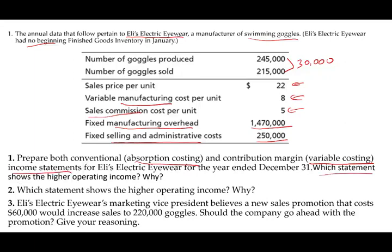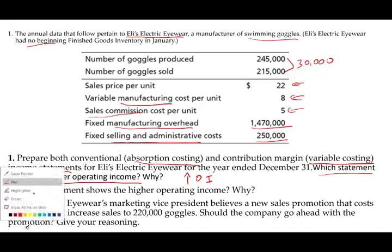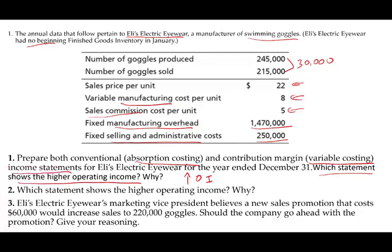Which statement shows a higher operating income and why? I'll give you a second to answer that based on your understanding. Absorption costing will have a higher operating income. The reason I know this is because I produced 245,000 units and sold only 215,000 units. Under absorption costing, some of the fixed manufacturing overhead — some of that $1,470,000 — will stay on the balance sheet rather than being expensed.